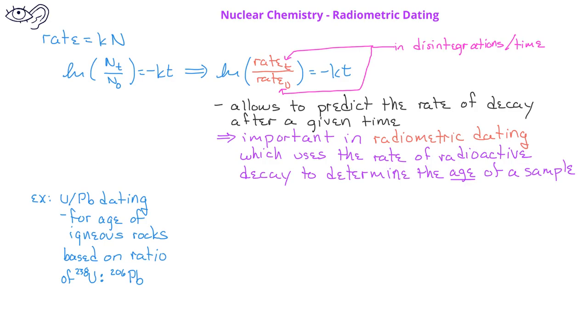Another method of radiometric dating is radiocarbon dating. Radiocarbon dating is used to determine the age of organic samples derived from living things up to about 50,000 years old.